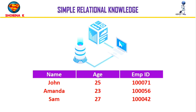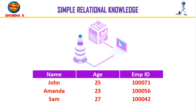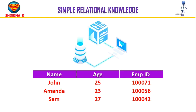Taking an example, we have three different columns: name, age, and employee ID, with three different names along with their ages and employee IDs. This is how you represent simple relational knowledge — you define the relation between name, age, and employee ID.